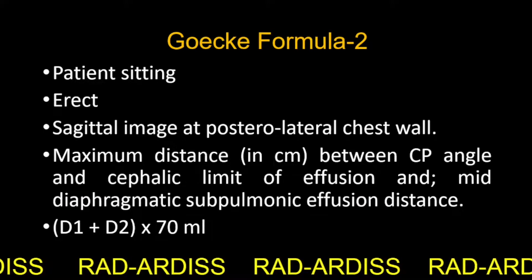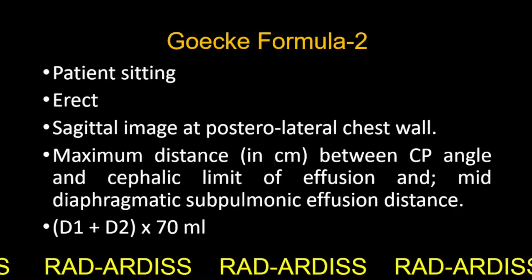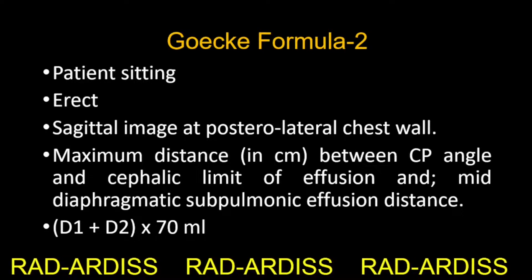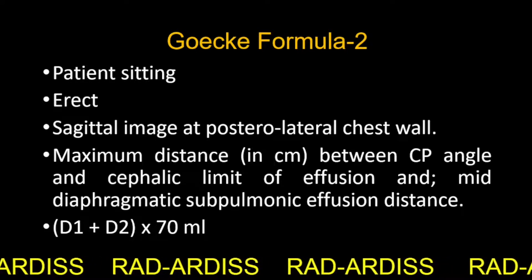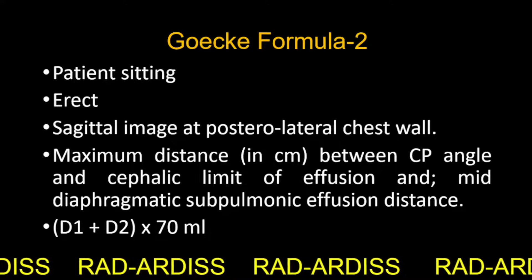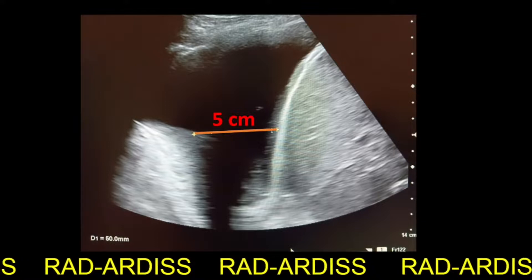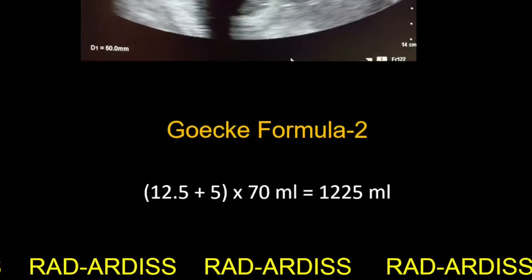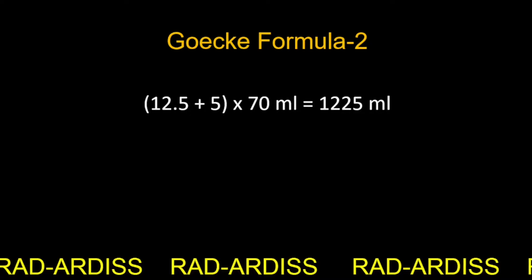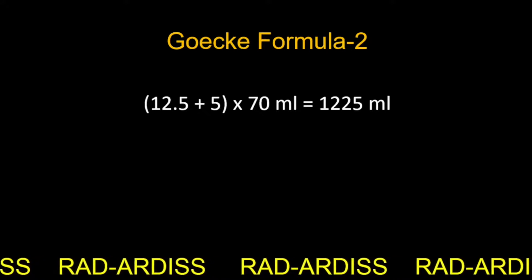Proceeding to Goiki formula number 2. Here also the patient is sitting in the erect position and the sagittal image is taken at the posterolateral chest wall. The maximum distance between the CP angle and the caudal limit of effusion at the base of the lung is measured in centimeters, and the mid-diaphragmatic subpulmonic effusion distance is also measured in centimeters. Both are added up and multiplied by 70. In our case, the mid-diaphragmatic subpulmonic effusion distance is approximately 5 centimeters, giving a total of 1225 ml. According to the literature, Goiki formula number 2 is the most accurate formula amongst these three.